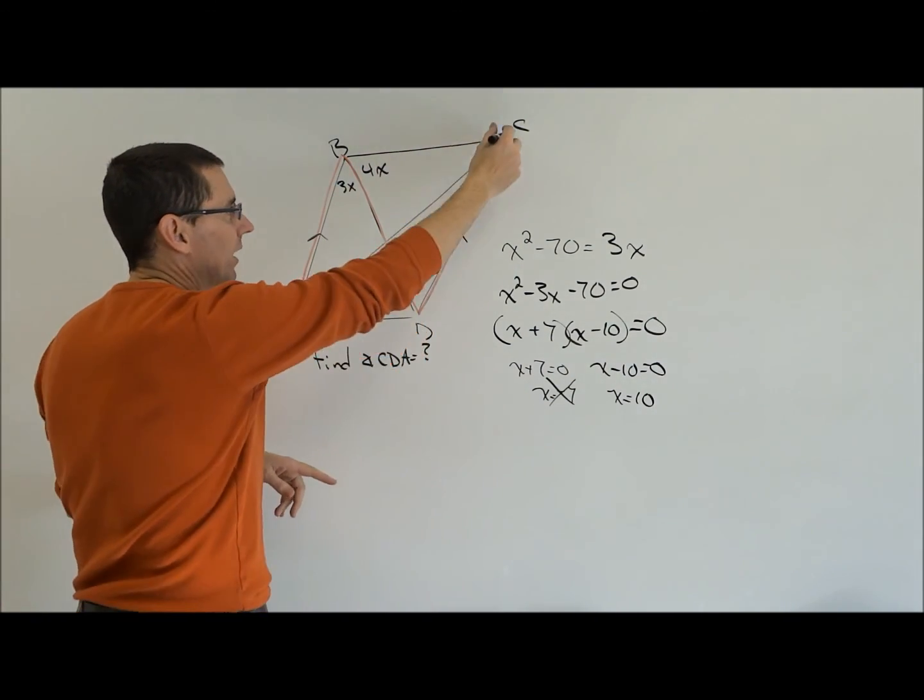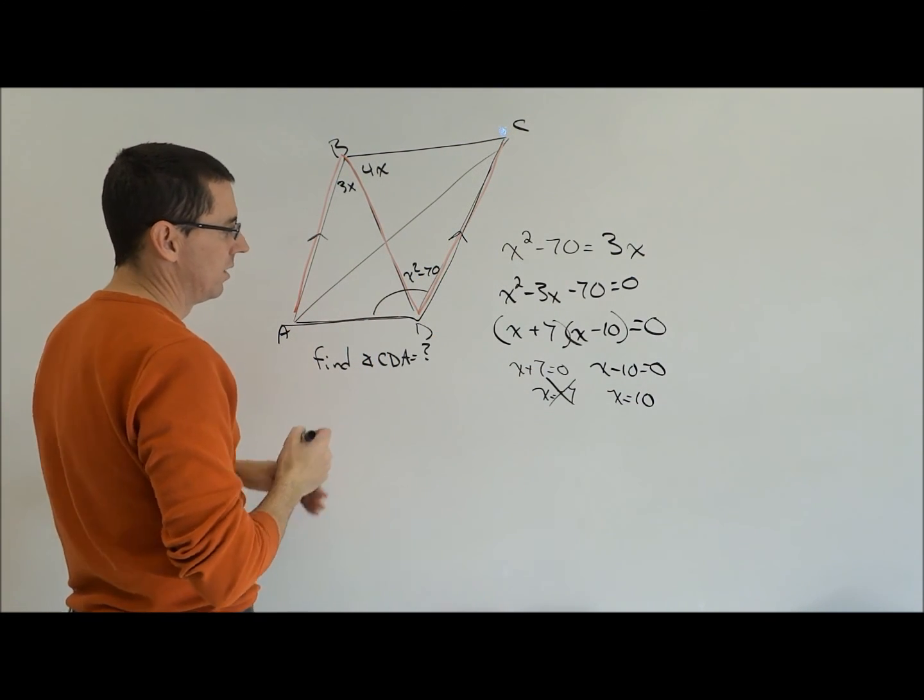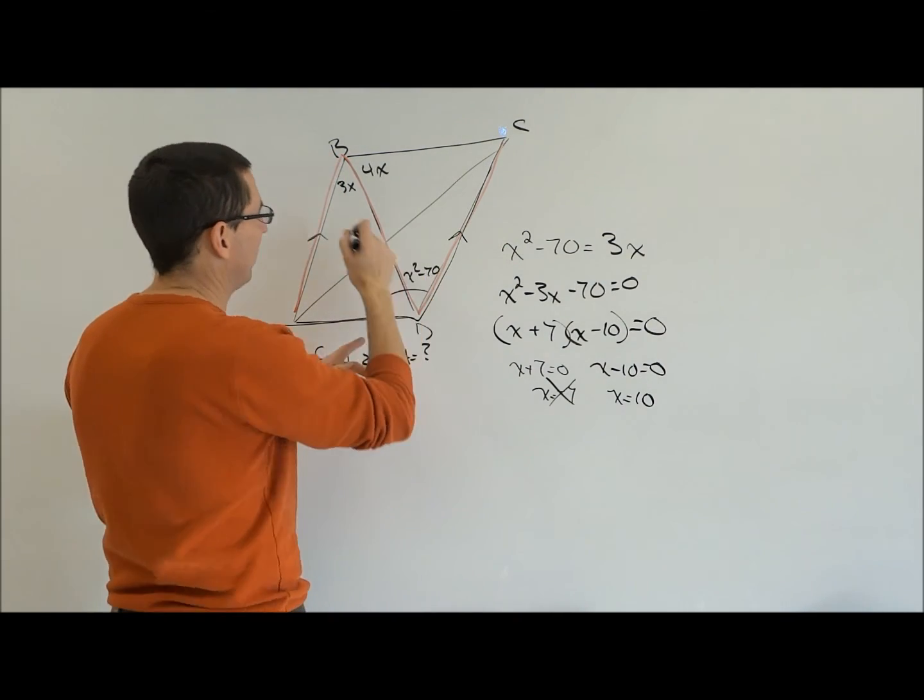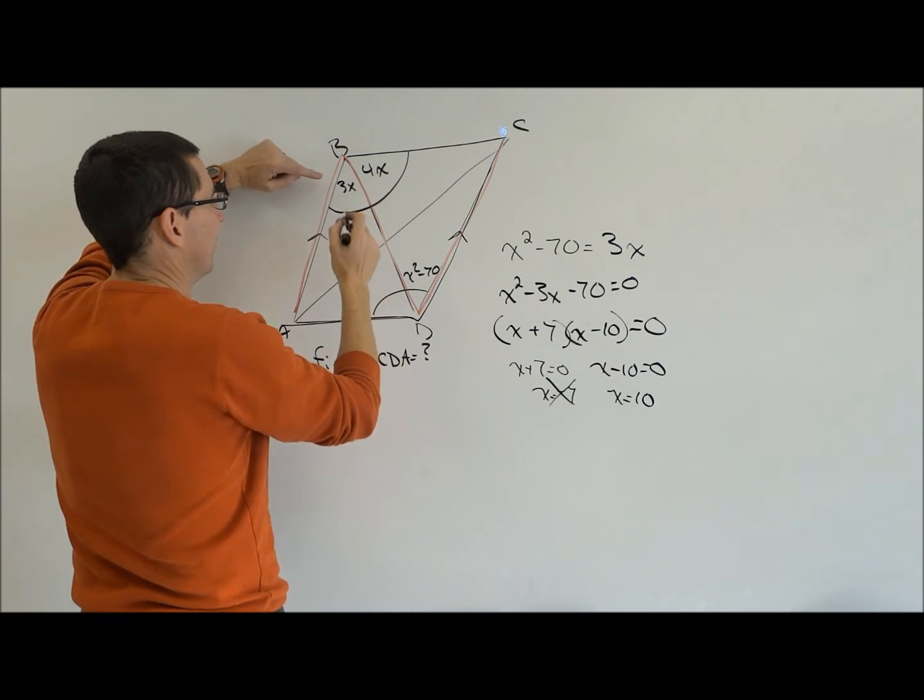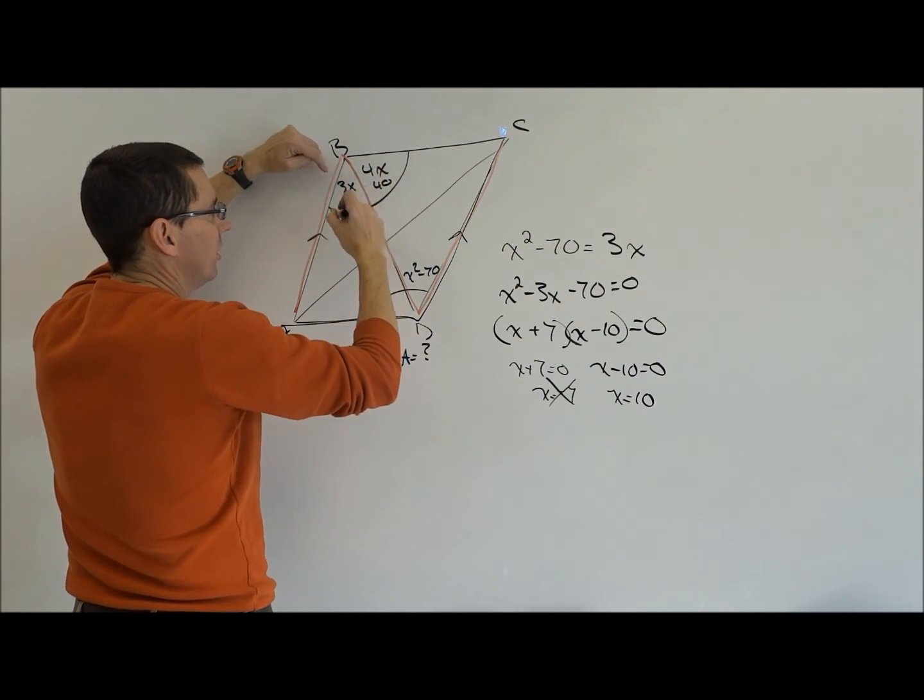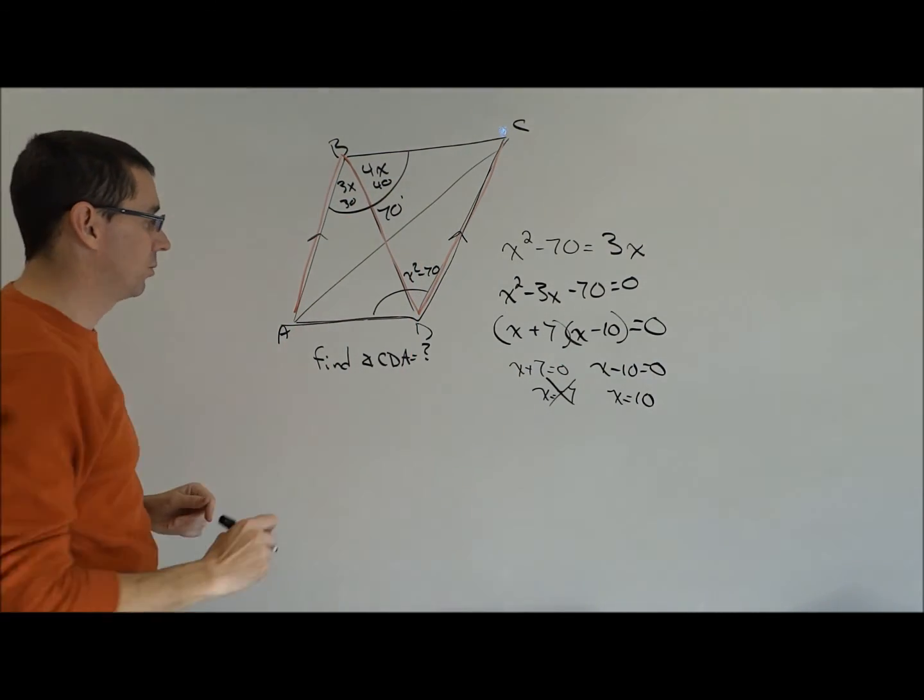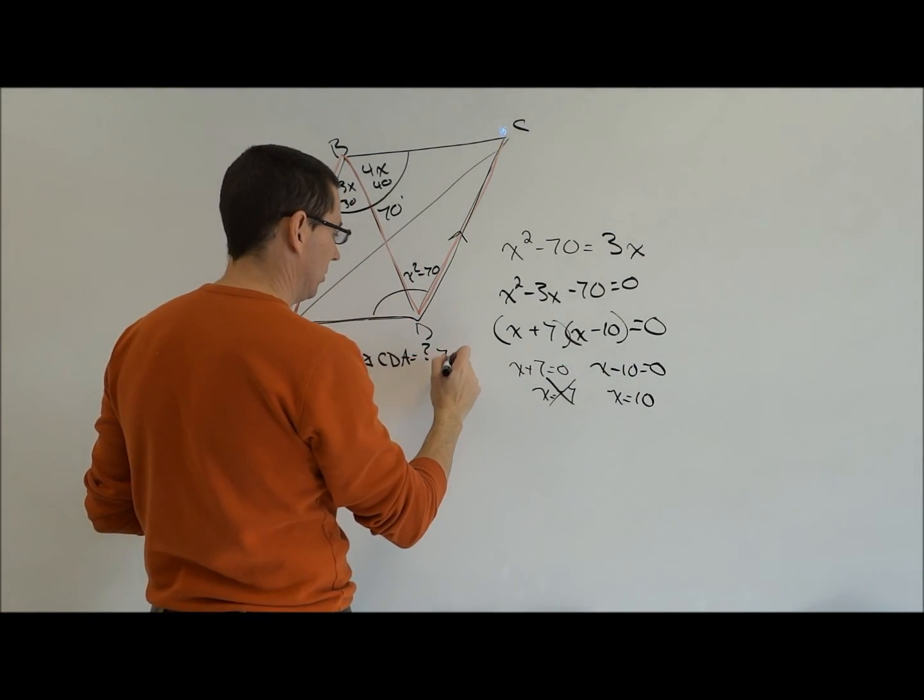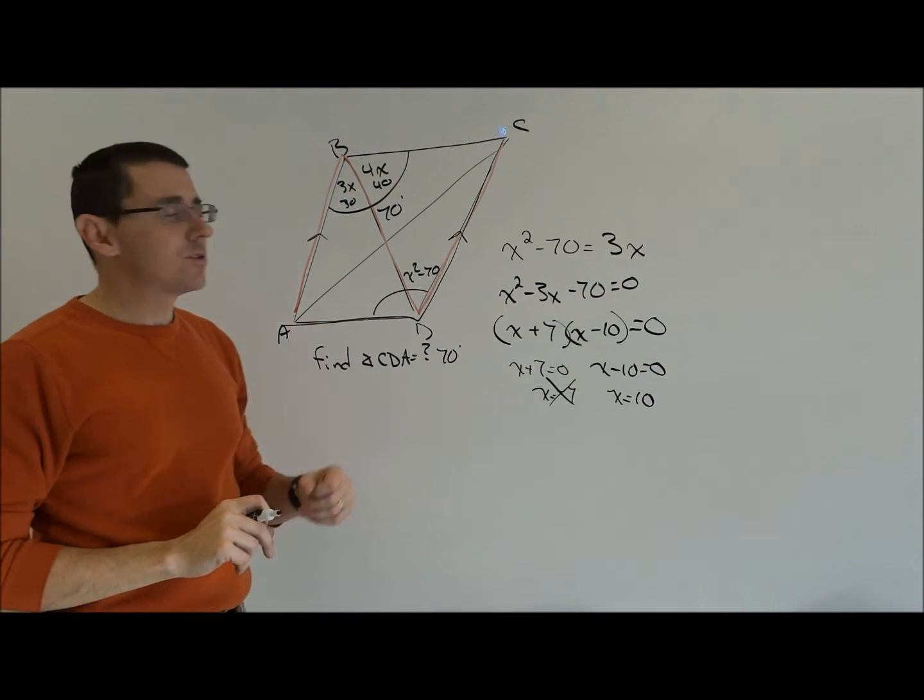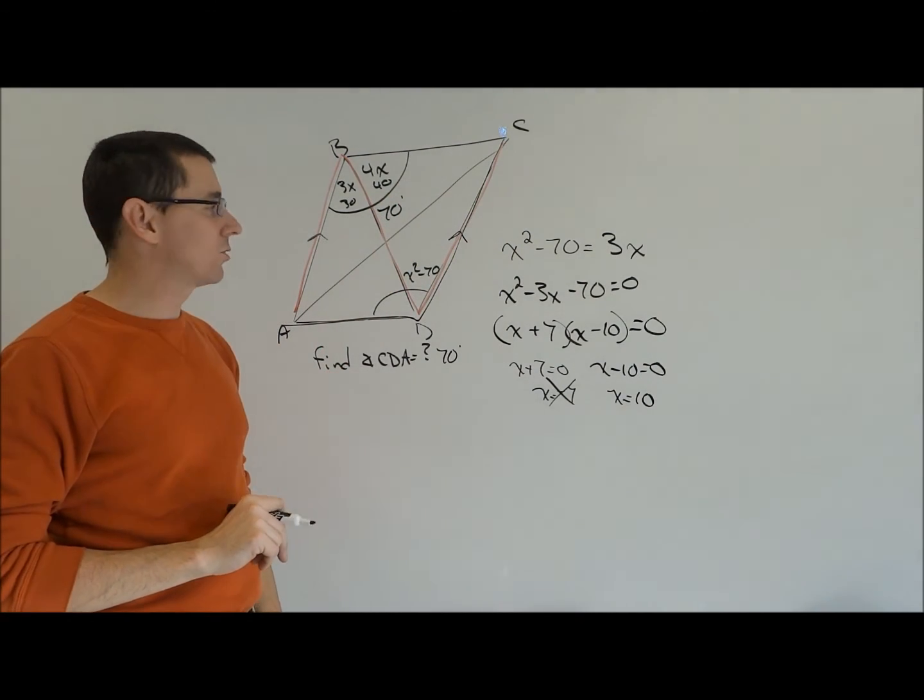Now, it says, what's the measure of angle CDA? This whole angle, remember, opposite angles of a parallelogram are congruent. So this whole angle equals this whole angle. And if I plug 10 in here, 3 times 10 is going to give me 30. 4 times 10 is going to give me 40. The whole angle is going to be 70 degrees. So we get angle CDA is equal to 70 degrees. So hopefully that gives you an idea of what it looks like when we're dealing with quadratic equations.